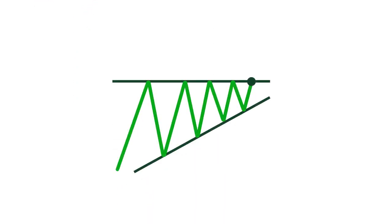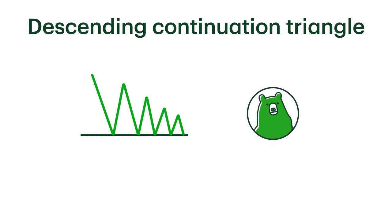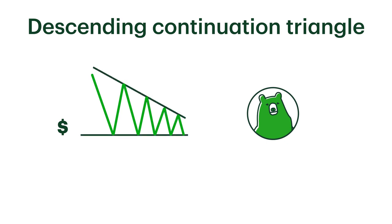The opposite of an ascending continuation triangle is a descending continuation triangle. This is a bearish pattern. It's formed when a stock price continually reaches the same lower limit, hits lower and lower highs on its way back down, and breaks through at a close beyond the lower level.